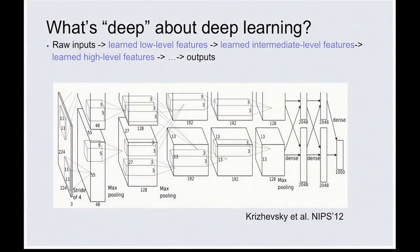Deep learning — which is this mystical-sounding term — just refers to pushing the machine learning problem further back in the pipeline and saying, let's learn which features to extract. All real systems are some combination of more than one learned layer and more than one engineered layer. What's deep about deep learning isn't some claim about profundity — one thing we're doing is learning hierarchical representations of the inputs. There's more than one step of these learned transformations, as described in Alex Krzyzewski's 2012 paper that blew the doors off the ImageNet competition that year.